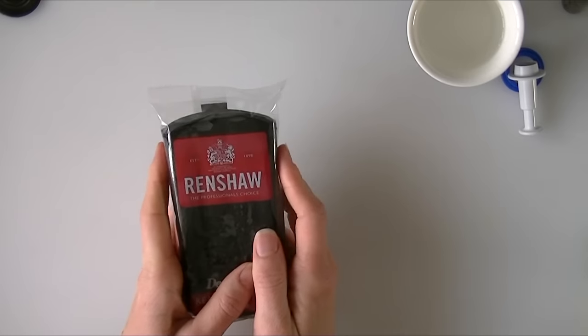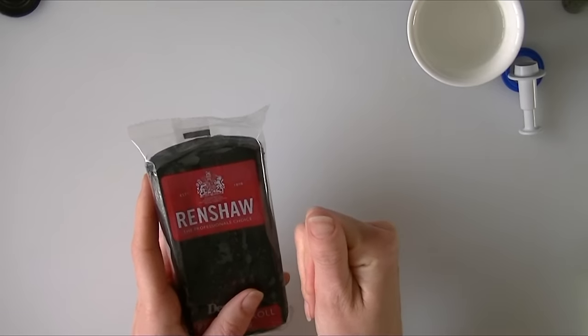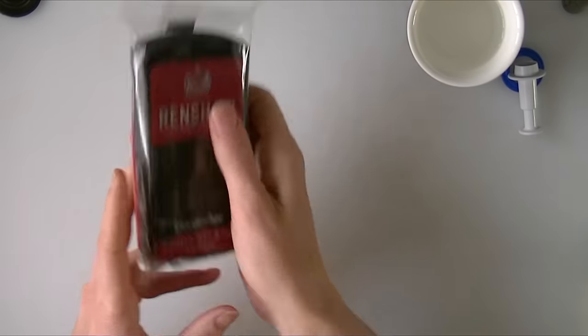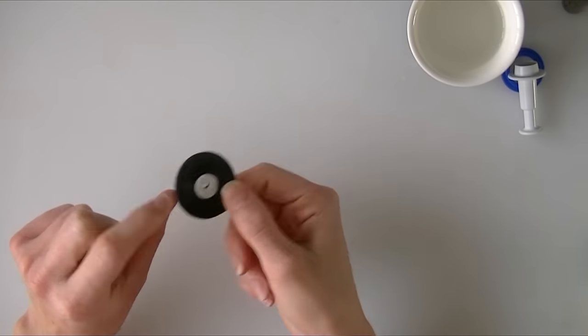Now I've got it ready dyed because if you try and dye the black it changes the consistency and it ends up really runny. So I've just got the Renshaw's one here and then I'll use a bit of white as well for the centre and then we can paint that to whatever colour we want at the end.